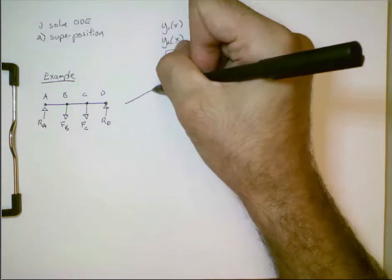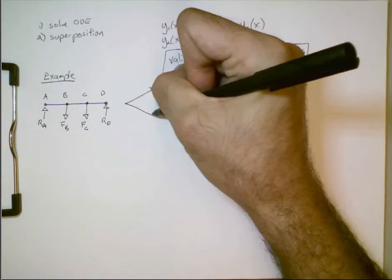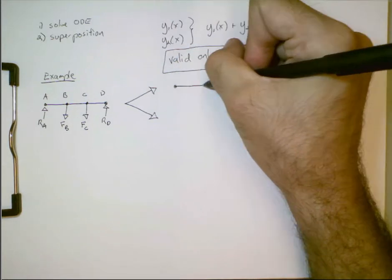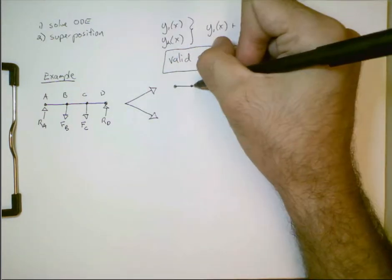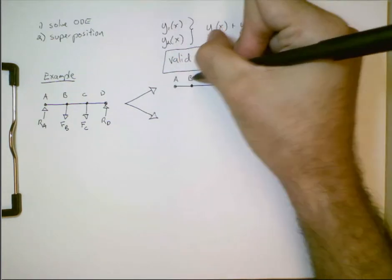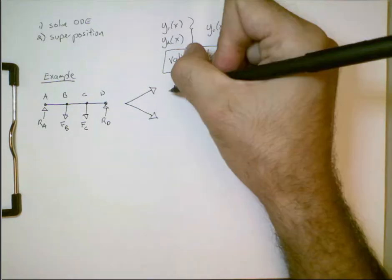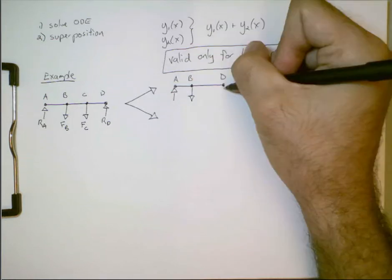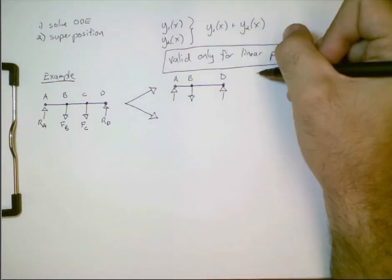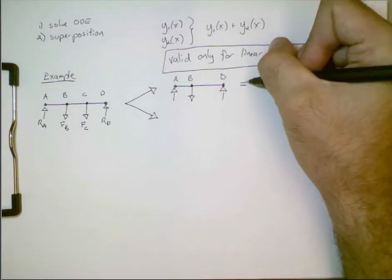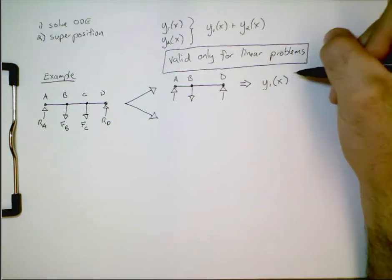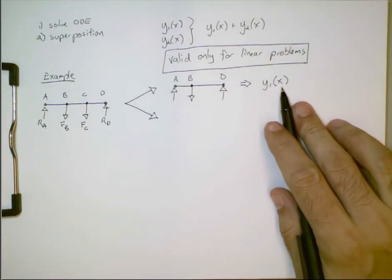And we can decompose this into two problems that are simpler, and those simpler problems are going to have a solution. So, let's split it into two parts. So, this first one, let's only consider the points A, B, and D. So, we have a reaction force there, we have an applied force there, and another reaction force. So, this is a simple situation that is in most tables, and we can look it up and get this solution, y1 of x.